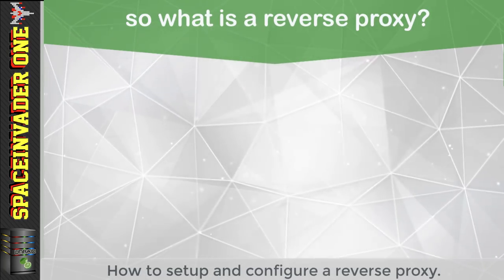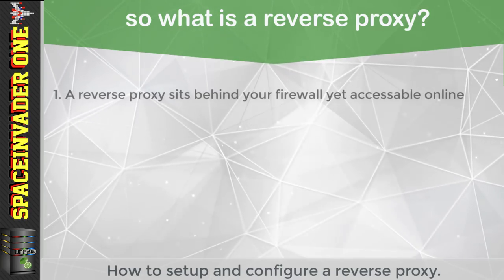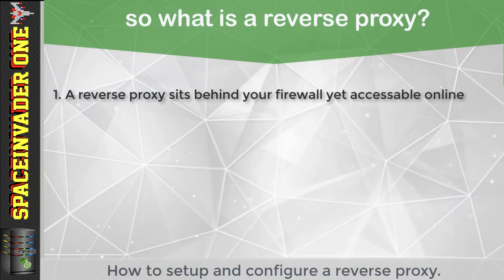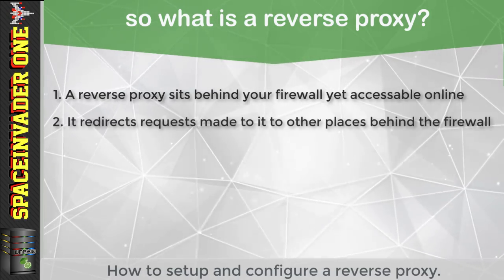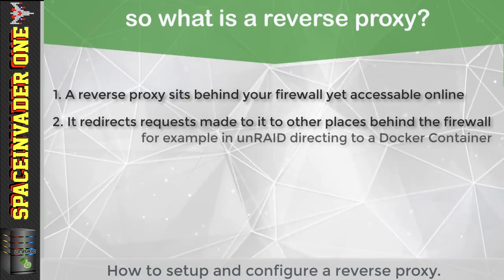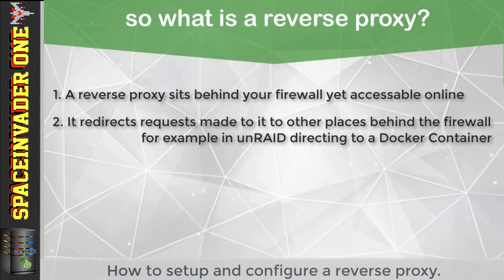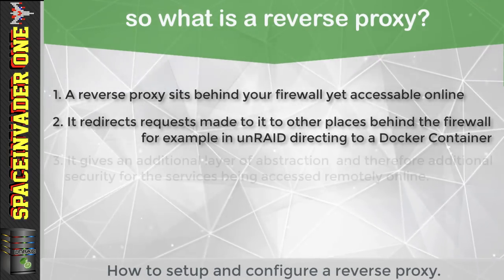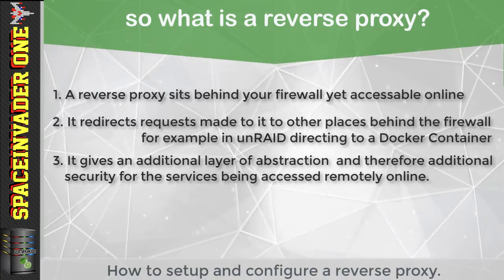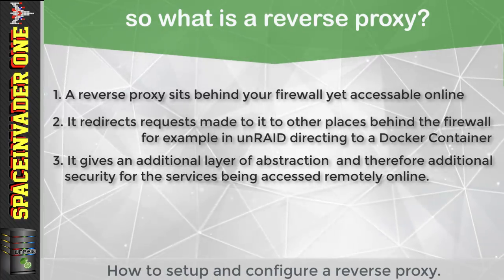So just what is a reverse proxy? A reverse proxy is something that sits behind your firewall yet it's accessible from the internet. What it does is it redirects requests made to it to the appropriate server, or in the use case we're doing in this video for Unraid, the appropriate Docker container running on the server. The reverse proxy gives us an additional layer of abstraction by protecting the things behind the proxy, therefore giving an additional layer of defense against a malicious attack.